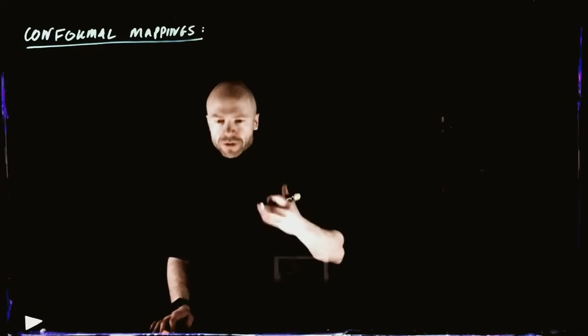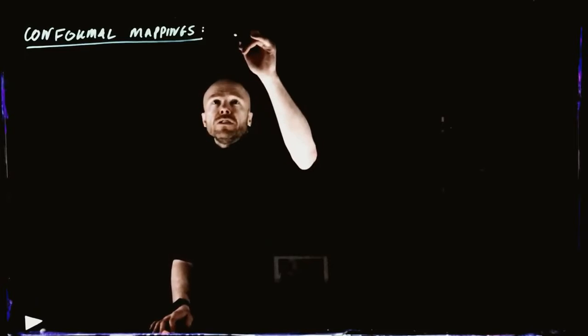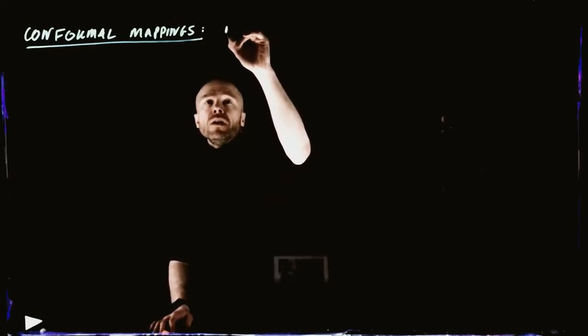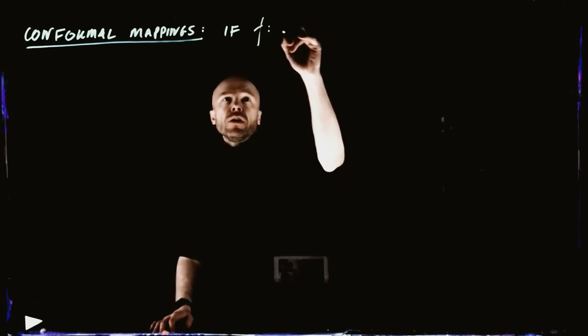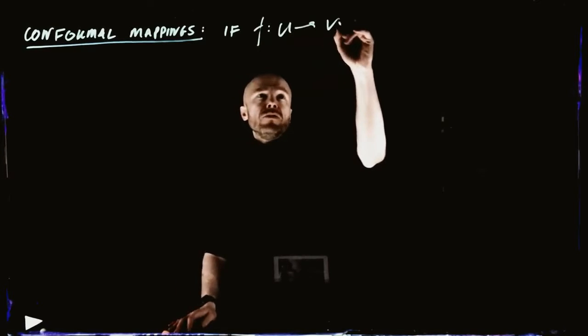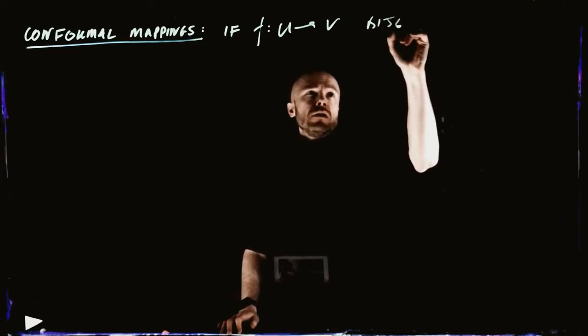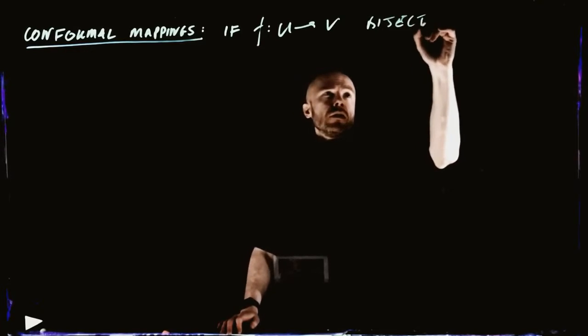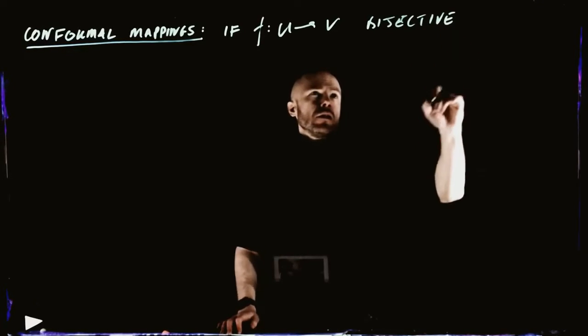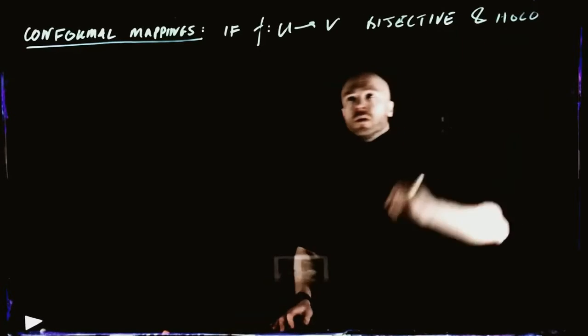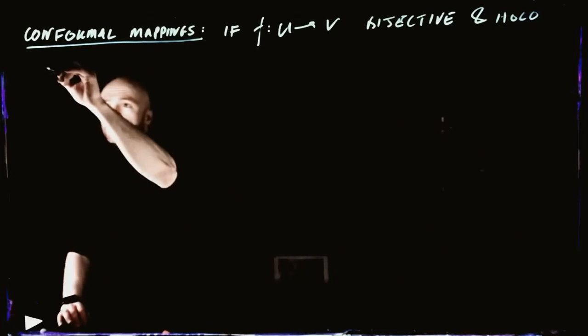Definitions of what a conformal map is differ slightly, but the Stein definition is as follows. If F goes from U into V and is bijective and holomorphic, then we say it's conformal.